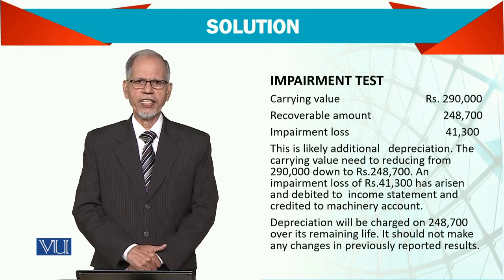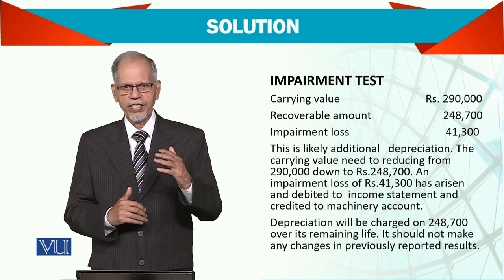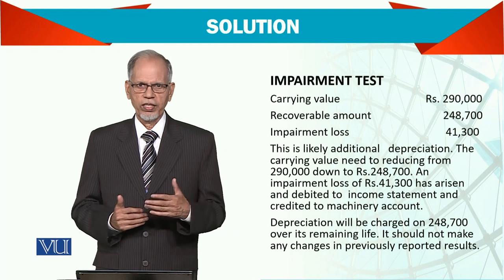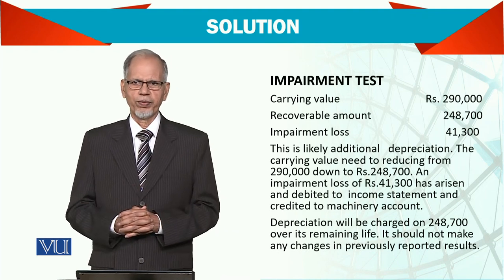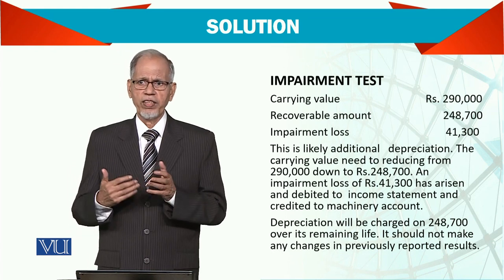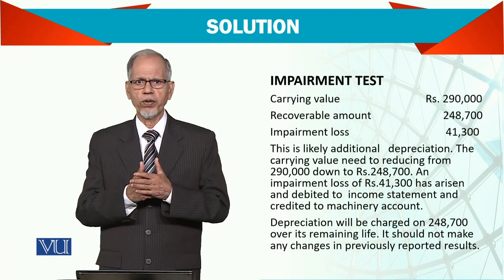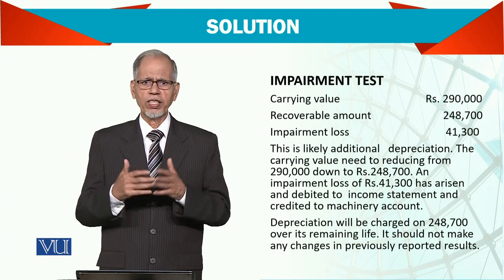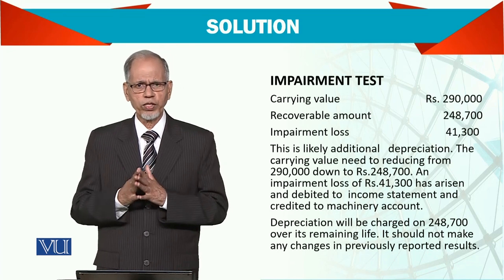An important issue here is how we select the discount rate and how we work out the cash flows over the remaining life of the asset. If the remaining life is three years, we look at what the inflow will be in the first year, second year, and third year, and we consider all the factors covered in cash flow statements.